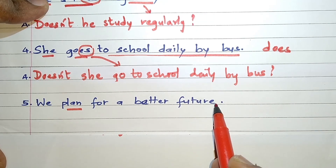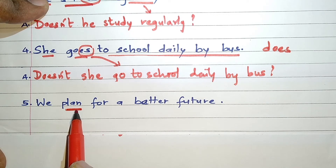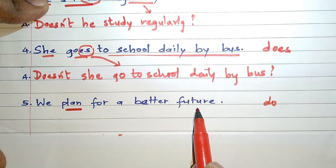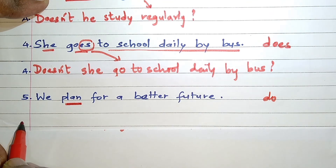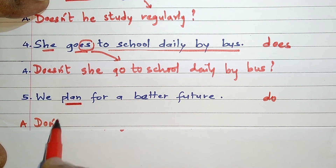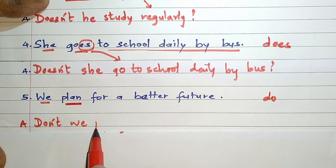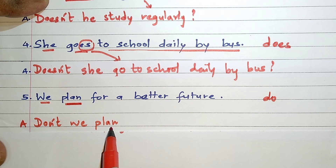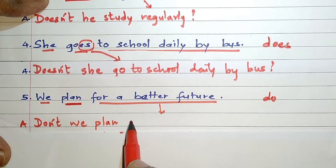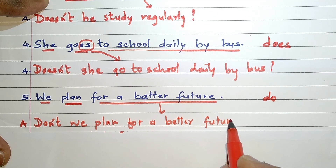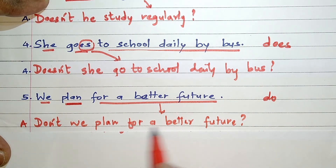'We plan for a better future.' 'Plan' is the verb, which means the sentence is in present tense, and the verb is not ending with S, I-E-S, or E-S, so we have to assume 'do'. The sentence is affirmative, so our interrogative answer will be negative — 'do' will become 'don't', followed by the subject 'we'. The root verb is also 'plan'. The remaining part, 'for a better future', is copied, followed by a question mark. This is our interrogative answer: Don't we plan for a better future?